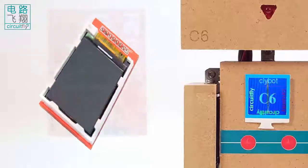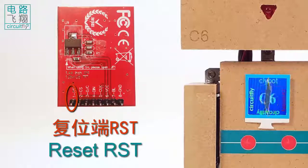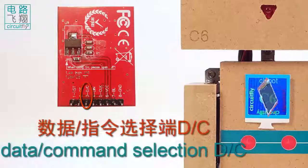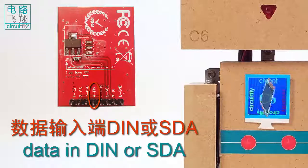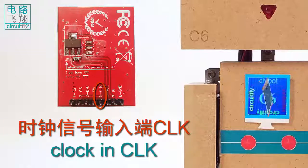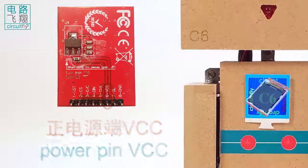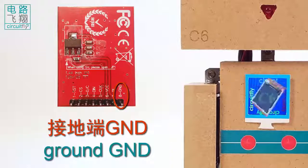Looking from the back of the module from the left to the right, the 8 pins are: Reset RST, Chip Selection CS, Data Command Selection DC, Data IN DIN or SDA, Clock-in CLK, Power Pin VCC, Backlight Control BL, and Ground GND.